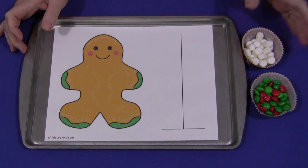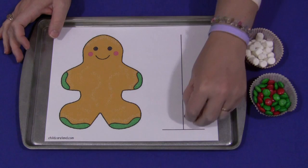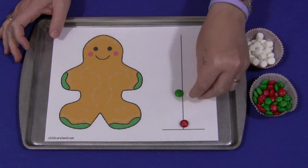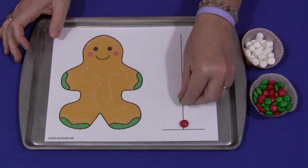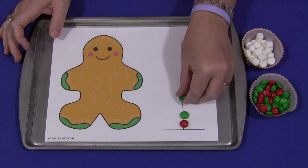And all the children would need to do for this activity is they would just follow the line up and put their M&Ms or their marshmallows or whatever they're using to measure the gingerbread man with on this line. This is great for eye-hand coordination and fine motor skills development.